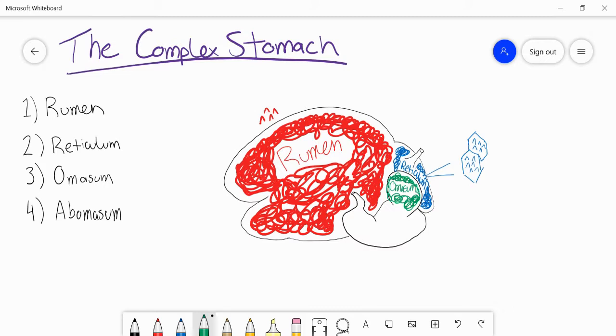The reticulum is different, like I just mentioned, than the omasum, in that it has these honeycomb types of cristae. And I'll just write it down here as well. The cristae that we see in the omasum, those are called crista reticuli, because they're in the reticulum.